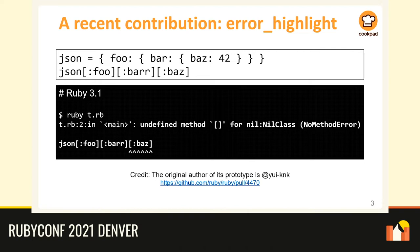Since Ruby 3.1, the error message will show a more detailed explanation. It says that the NoMethodError was raised when reading 'baz'. So we can understand that reading 'ba' returns nil without re-running. This feature was originally created by Ruby committer Uichiro Kaneko, and I completed the implementation. It is already included in the development branch of Ruby and will be released as part of Ruby 3.1 this December.